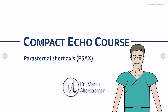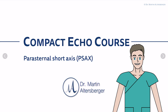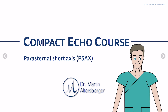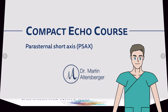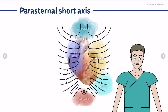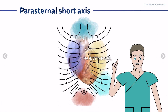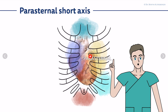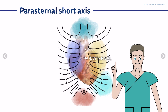Welcome back to the Compact Echo course. In this part of the course, we will talk about the parasternal short axis view. In the parasternal short axis view, we are located in the second to third intercostal space, besides the sternum, on the left side of the thorax.